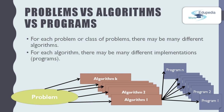Now let's talk about the difference between problems, algorithms, and programs. There are many categories of problems: polynomial class, non-polynomial class (NP class), and NP complete class. For each problem or class of problems, there may be many different algorithms. For each algorithm, there may be many different implementations — we call these programs. We create algorithms by solving the problem, and we create programs to use the algorithm. Before creating the algorithm, we must understand the problem; after creating it, we implement it using a program.